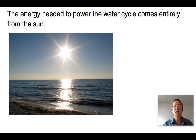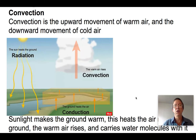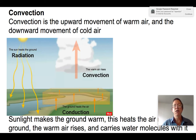Essentially what happens is light energy from the Sun hits the surface of the Earth, making it warm. This causes water molecules to vibrate more rapidly and causes them to move into the air. This is powered by a process called convection.